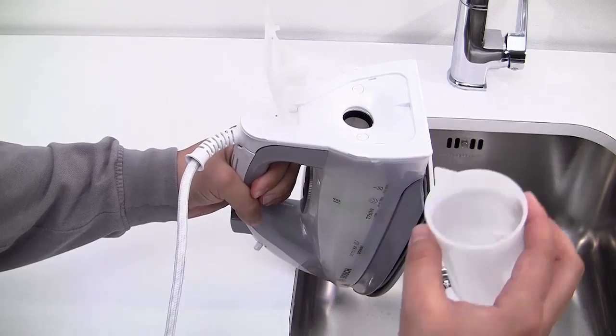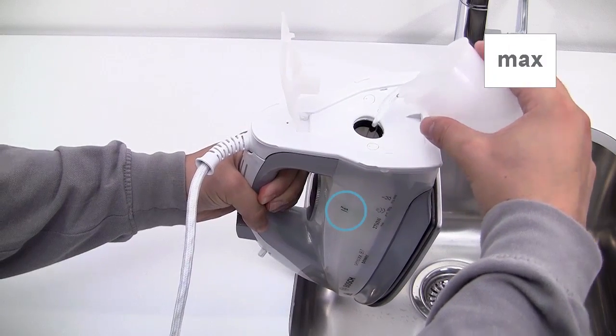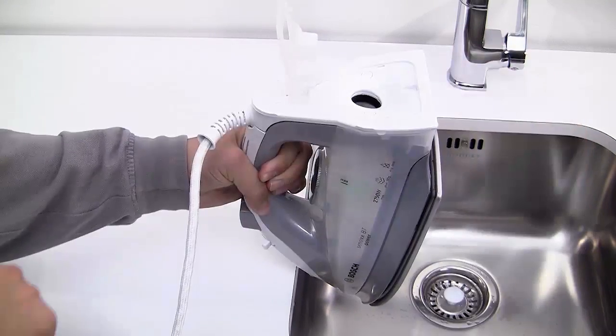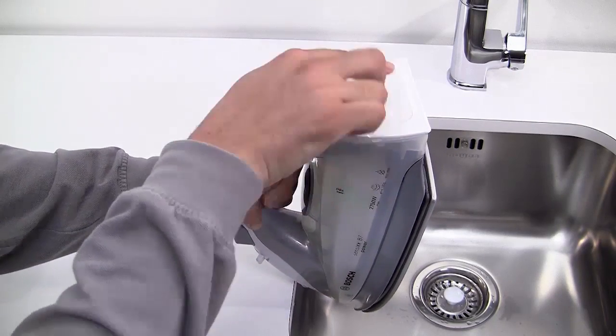Fill the iron with water and securely close the cover. Ensure that you have not overfilled the water tank by checking the water level marking. Now plug the iron back into the mains.